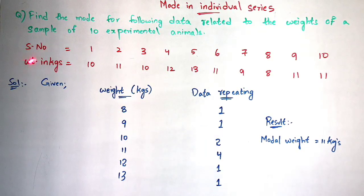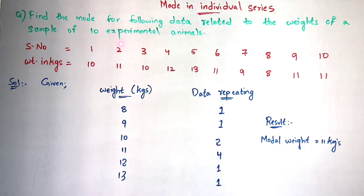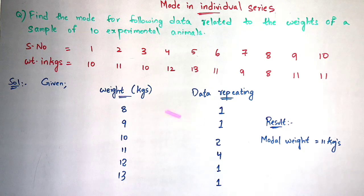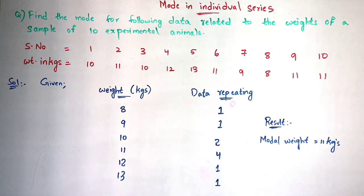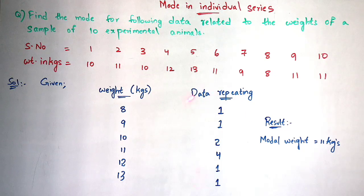Coming to the mode in individual series, there will be a question and data given for you. Find the mode for the following data related to the weights of a sample of 10 experimental animals. You have to represent two columns within a table: one column for the weights given, and one column for data repeating, that is how many times each number has been repeated in the data.